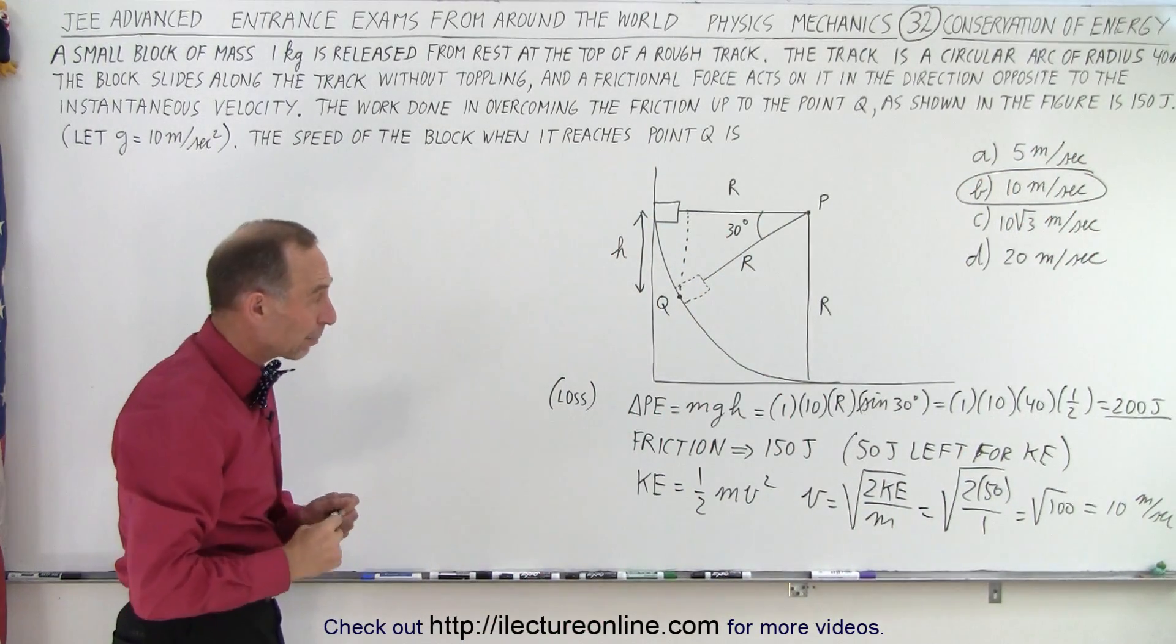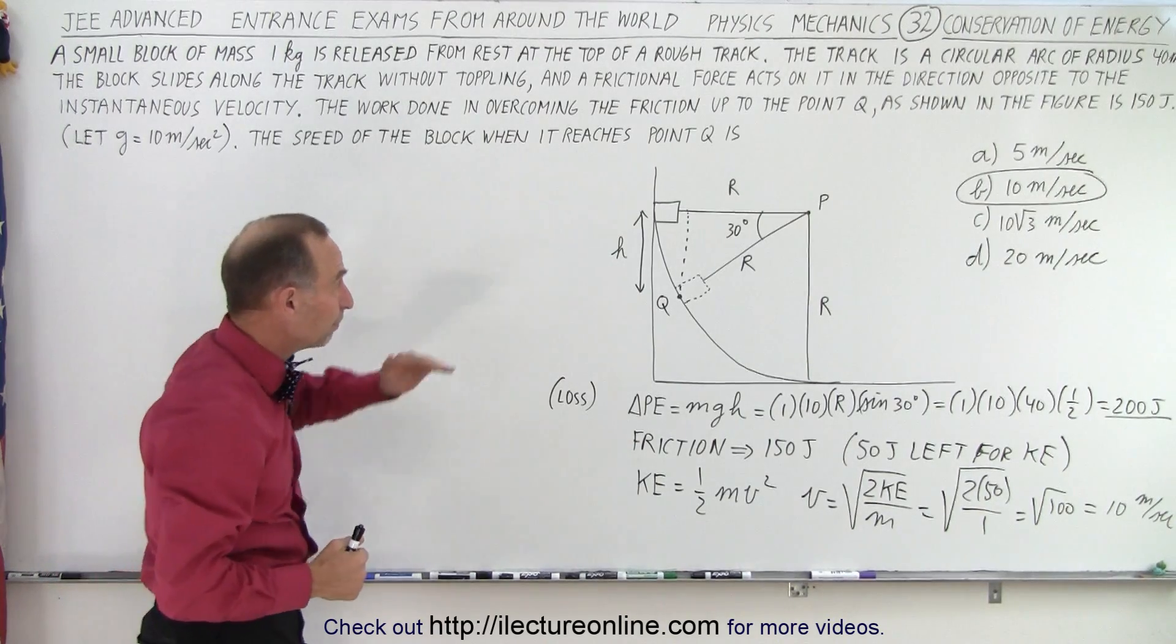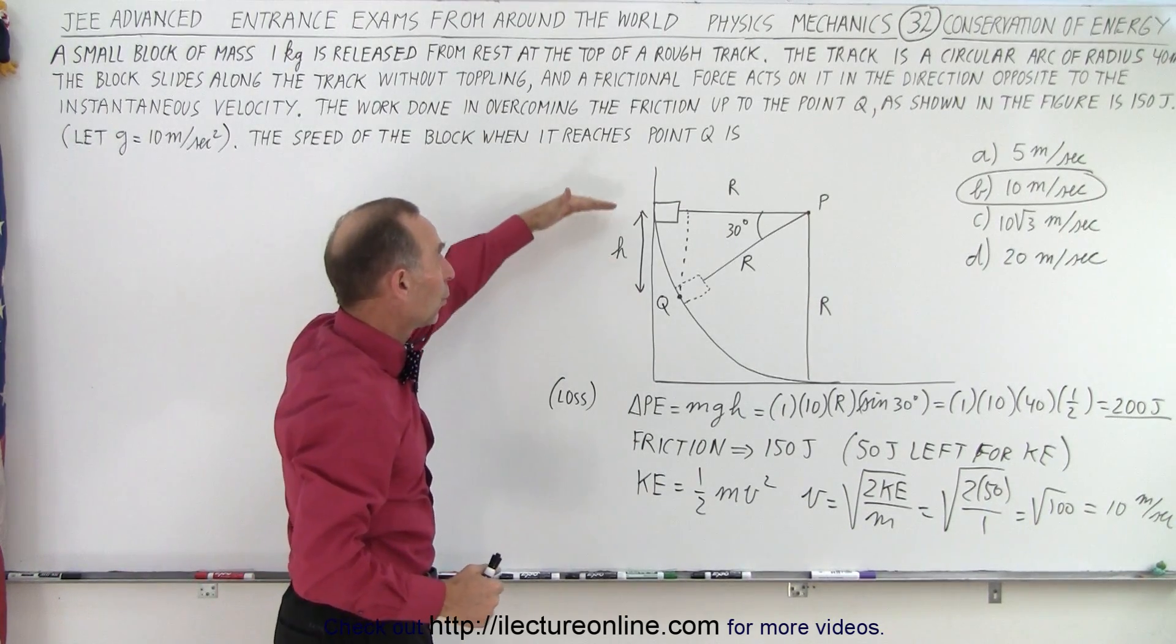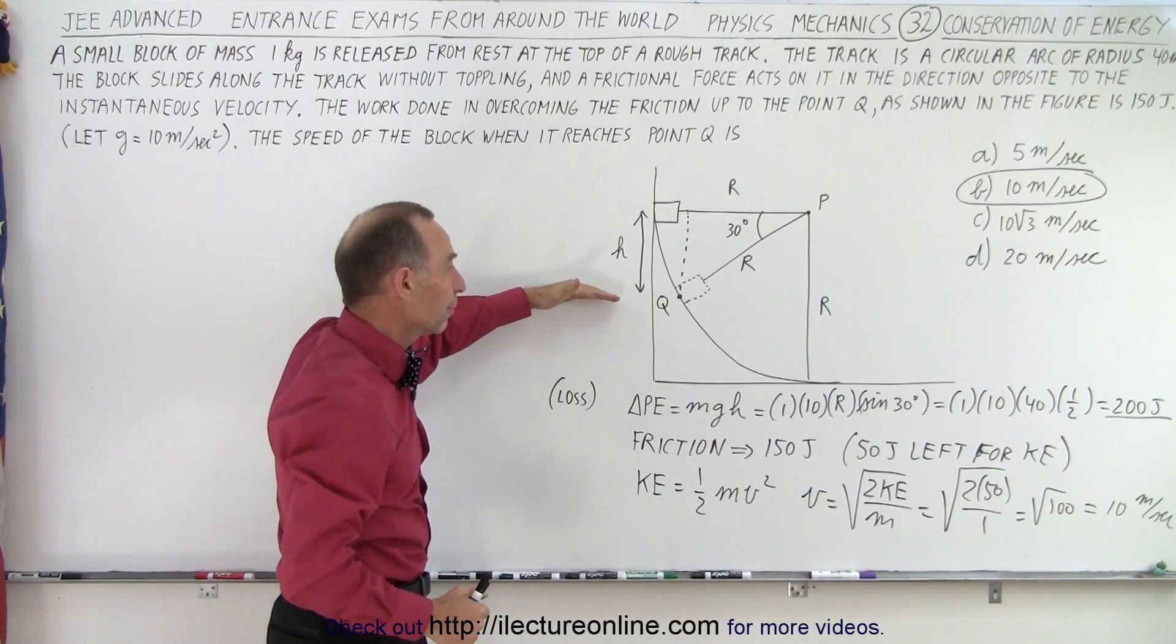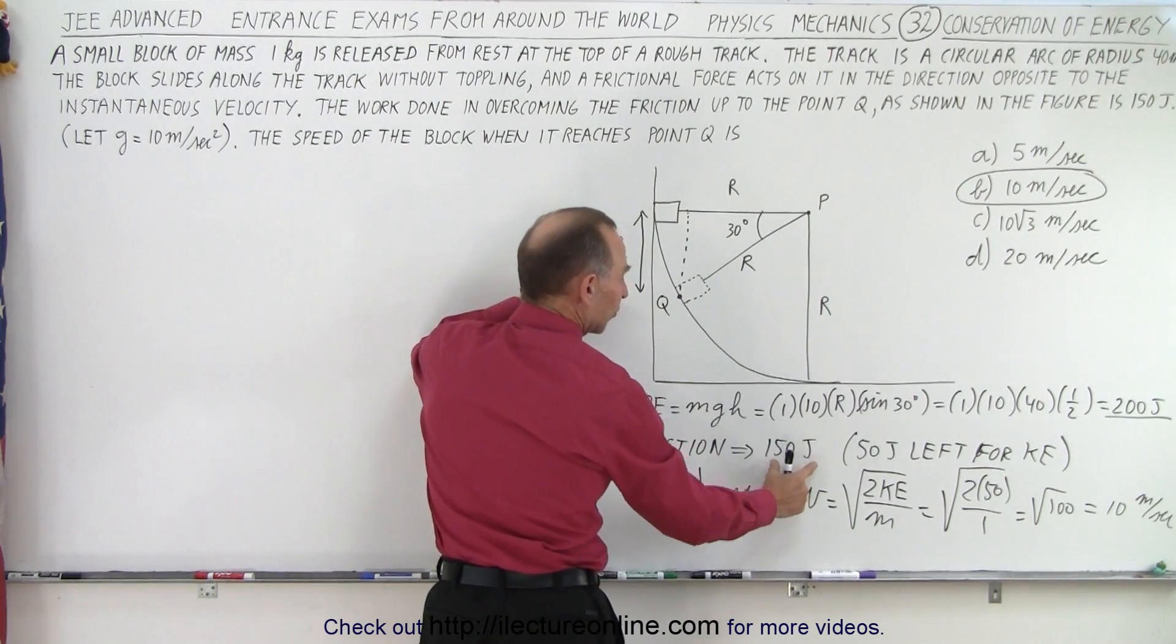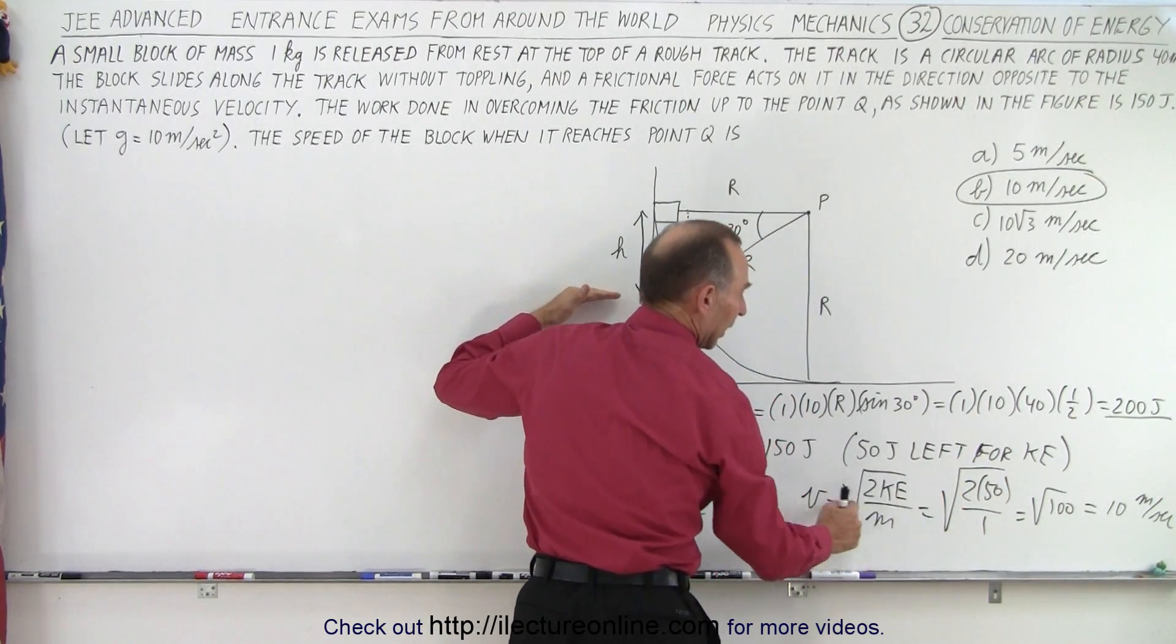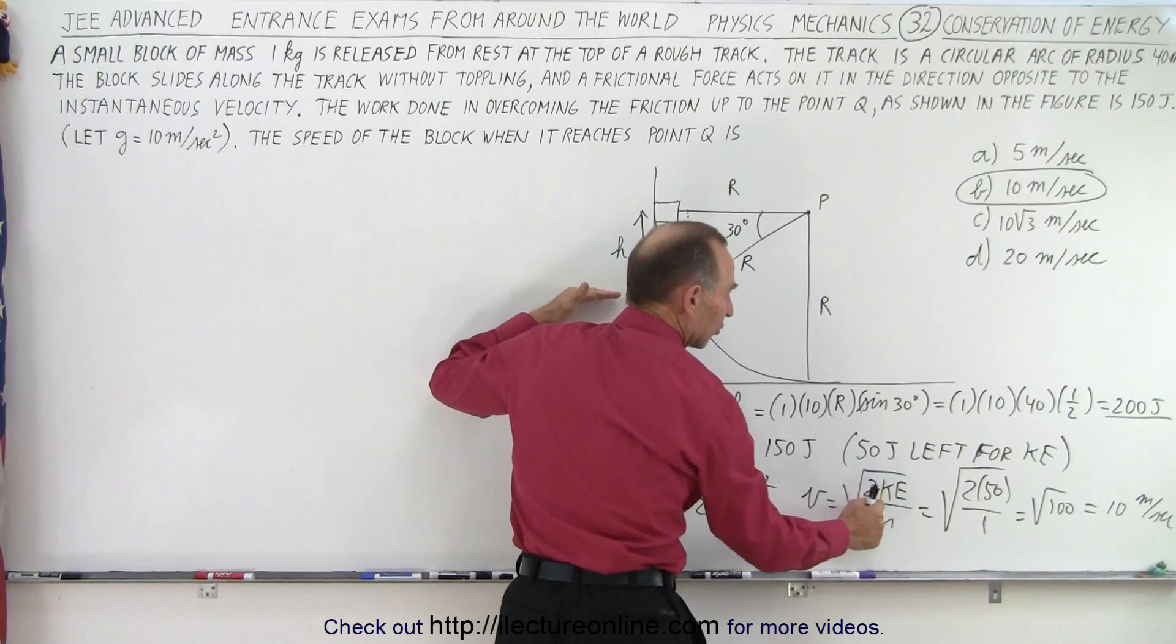So actually this is not a bad problem. You simply have to realize it's a conservation of energy problem. We lose 200 joules of potential energy, 150 of it is used to overcome the friction, the remaining 50 is used for kinetic energy, and then velocity is twice the kinetic energy divided by mass.